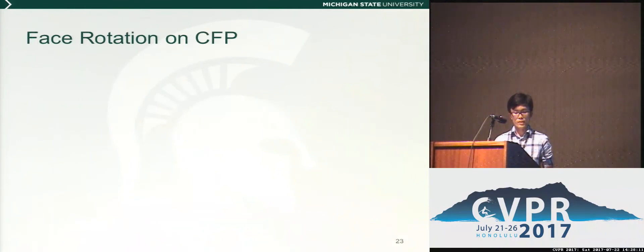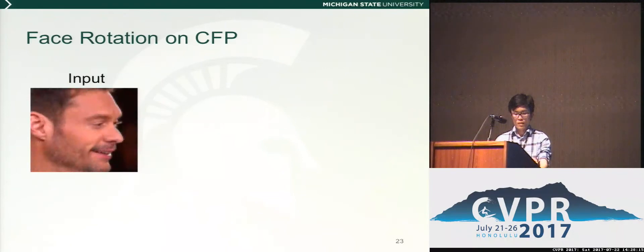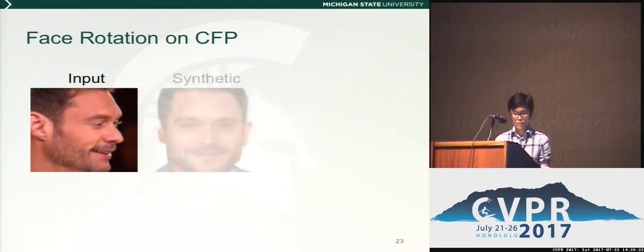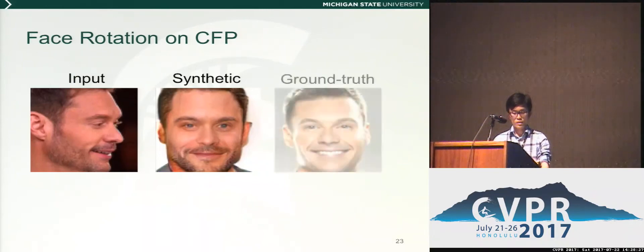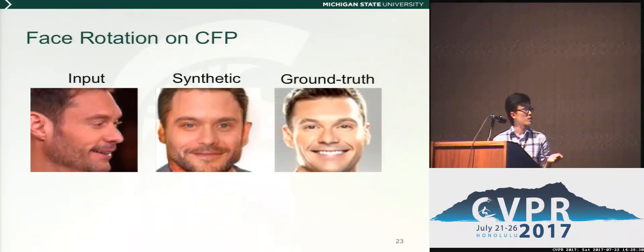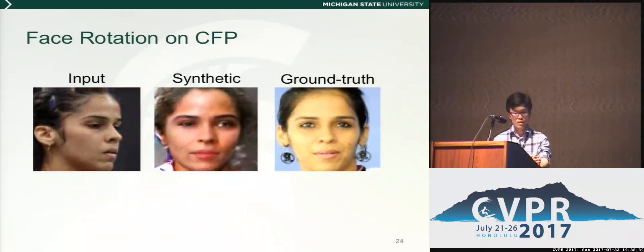Finally, we present the pose rotation results on benchmark datasets. This is the input image in the CFP dataset — this is a very challenging case where the pose is extreme. This is our synthetic result. As you can see, it is very similar to the ground truth image in terms of identity. And this shows more results in the CFP dataset.